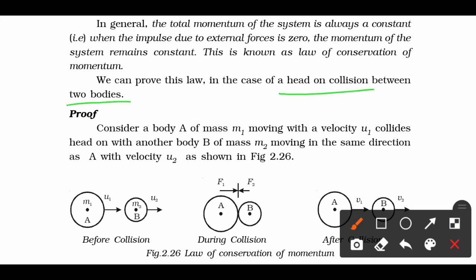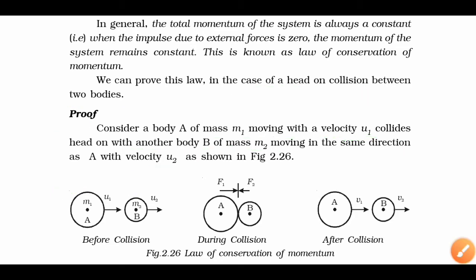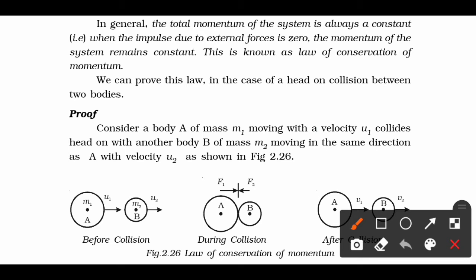We can prove this law in the case of head-on collision between two bodies. Consider body A of mass m1 moving with velocity u1, and body B of mass m2 moving in the same direction with velocity u2, as shown in the figure. Before the collision, both objects A and B have masses m1 and m2, and velocities u1 and u2 respectively.